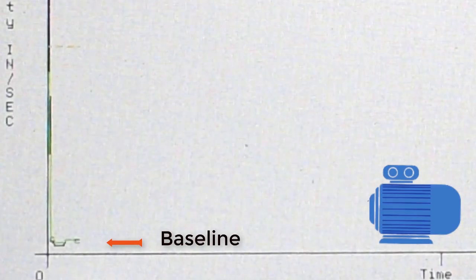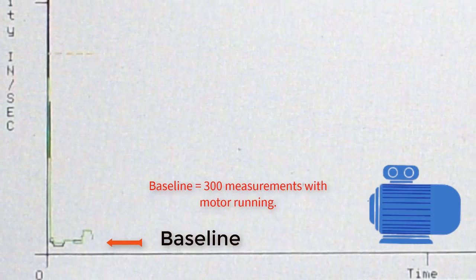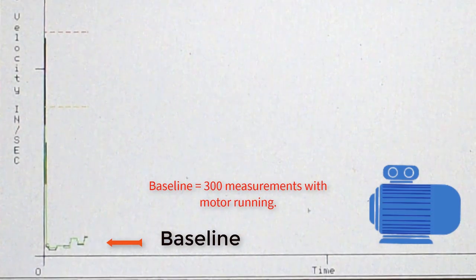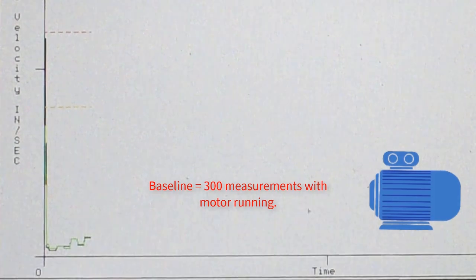Here's an example of our system reading the normal vibration level of a motor it's attached to. Our machine learning algorithm automatically sets warning and alarm thresholds based off of these values.